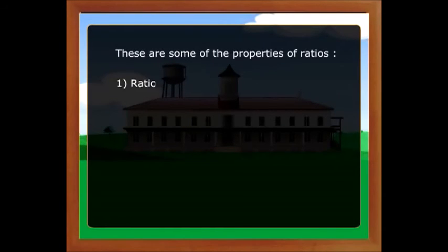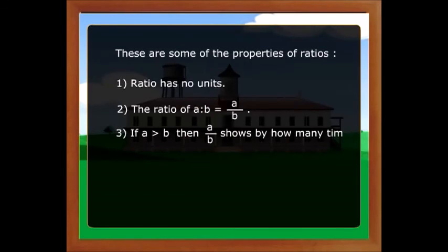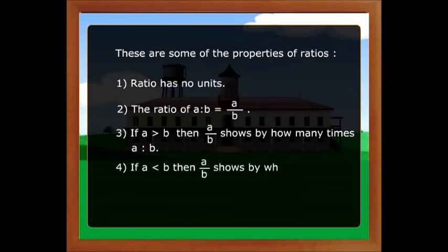These are some of the properties of ratios. One: ratio has no units. Two: the ratio of A is to B is equal to A divided by B. Three: if A is greater than B, then A divided by B shows by how many times A is greater than B. Four: if A is less than B, then A divided by B shows which part A is of B.